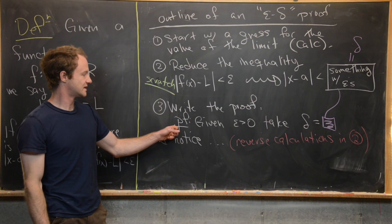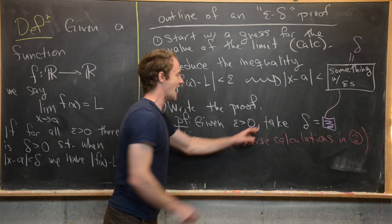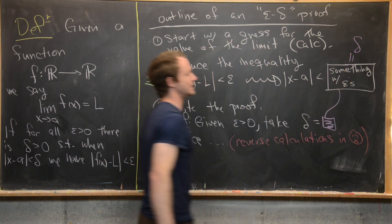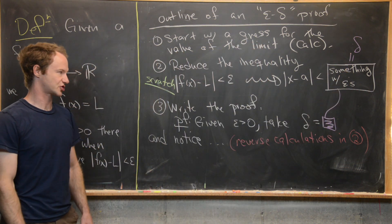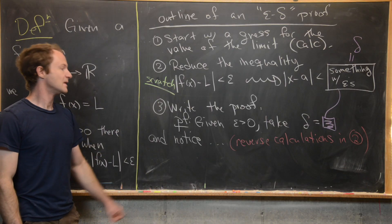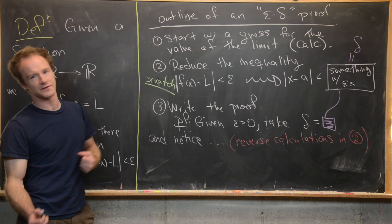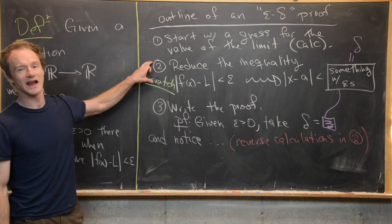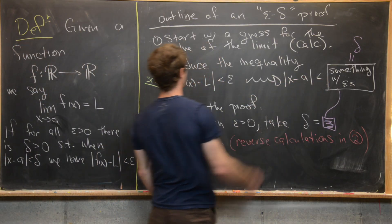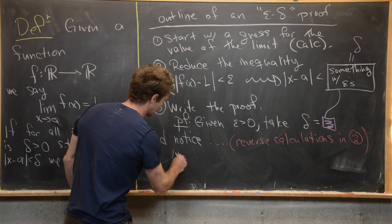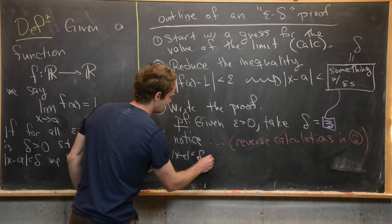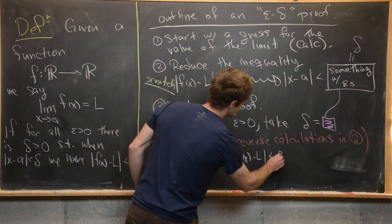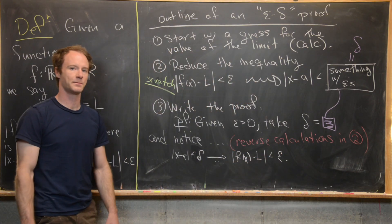The proof should go like this: given epsilon greater than 0, take delta equal to the value you calculated in the scratch work. Then observe that if |x − a| < delta, and reverse the calculations from the scratch work, starting from |x − a| < delta and ending at |f(x) − L| < epsilon.